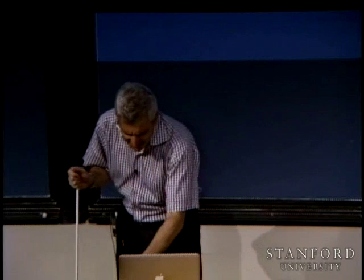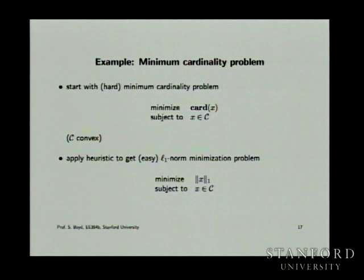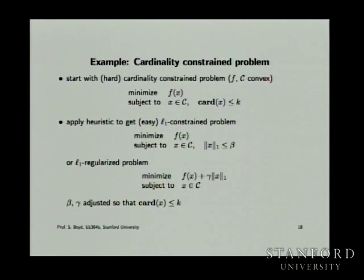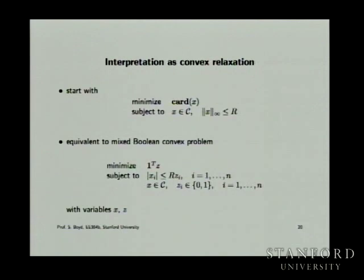Last time, we saw the basic idea. The simplest idea is: if you want to minimize the cardinality of x, find the sparsest vector x that's in a convex set. The simplest heuristic — and today we'll see lots of more sophisticated variations — is simply to minimize the one-norm of x, subject to x in C. By the way, all the thousands of people working on L1 — this is all they know. The things we're going to talk about today, basically most people don't know.